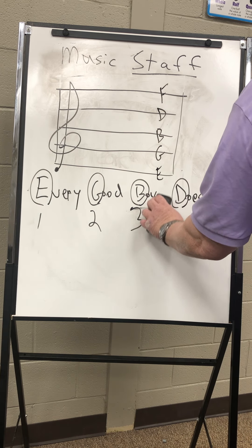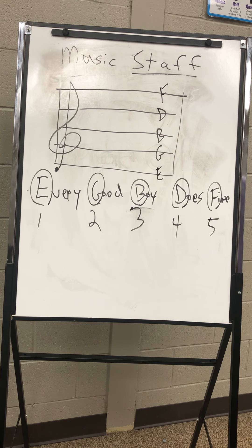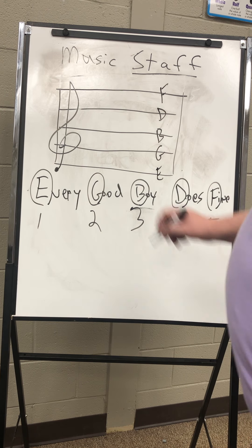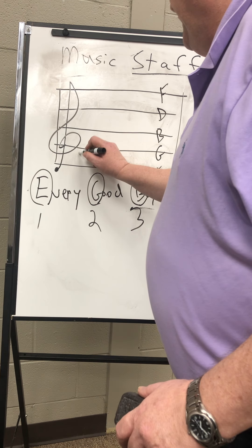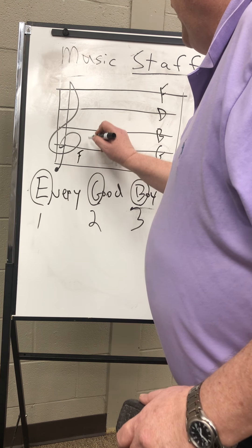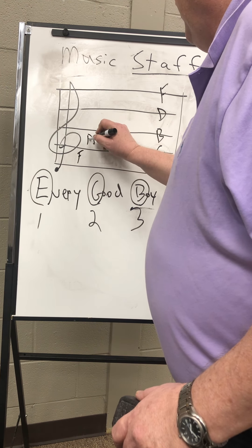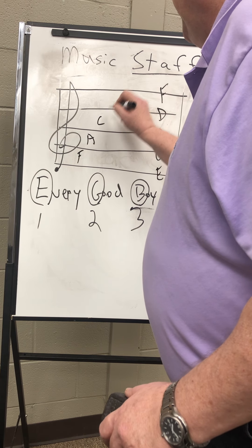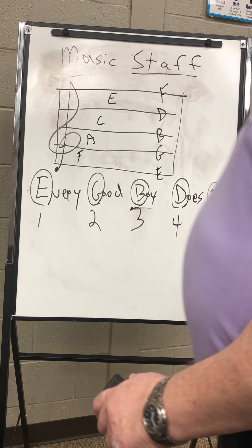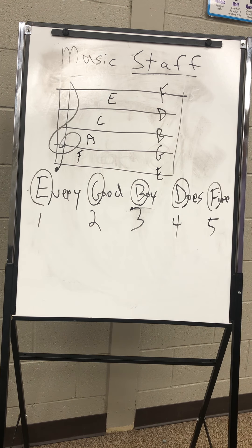Now we'll talk about our spaces. There's a word that helps us remember what our spaces are, and it is F, A, C, E — and if you notice, it spells the word FACE. So that's how we remember the spaces on the treble clef.